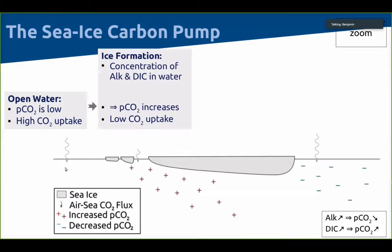Then ice starts to form and freezes, which leads to a concentration of alkalinity and DIC in the water. Let's consider sea ice as purely fresh water — so ice formation is simply removing fresh water out of the water column. That leads to a concentration of salinity and carbonate properties in the water, which causes an increase in pCO₂ and reduces CO₂ uptake.